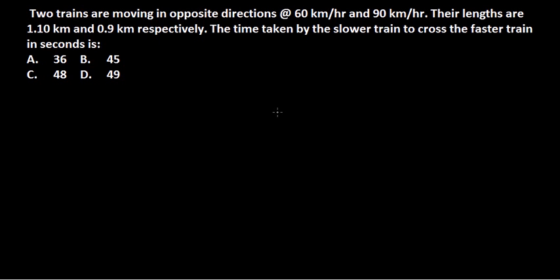Let's solve this relative speed problem. Two trains are moving in opposite directions — one at 60 kmph and another at 90 kmph. Their lengths are 1.1 km and 0.9 km respectively. We need to find the time taken by the faster train to cross the slower train, and the answer should be in seconds.